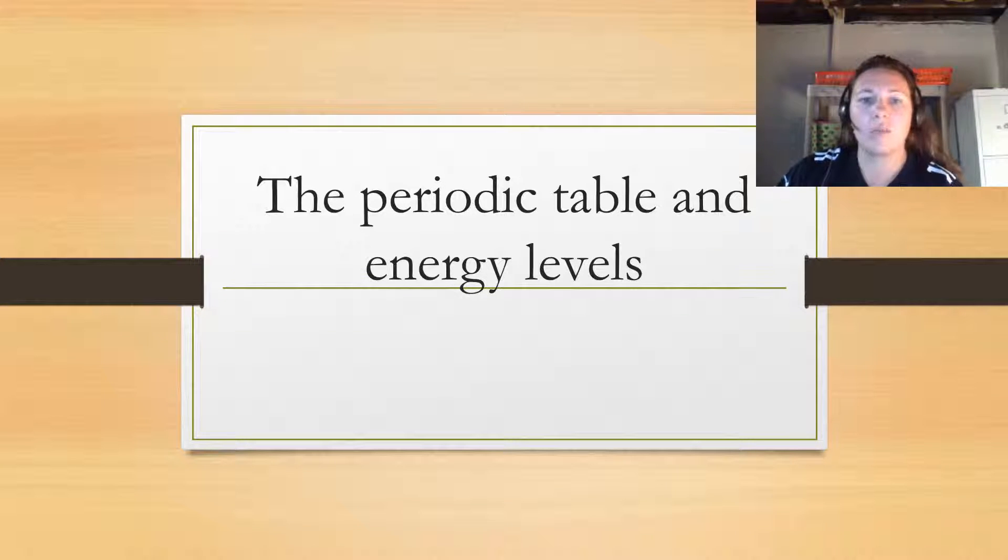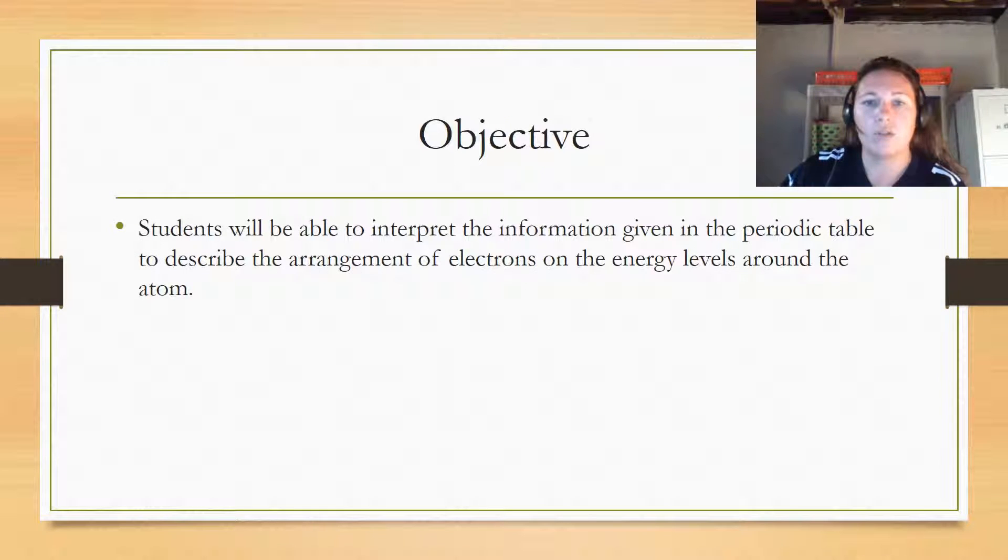This week we're going to be talking about the periodic table and the energy levels that you will find in each atom. The objective is that you will be able to interpret the information given in the periodic table to describe the arrangement of electrons on the energy levels around the atom. That sounds like a lot but it's really not that bad.